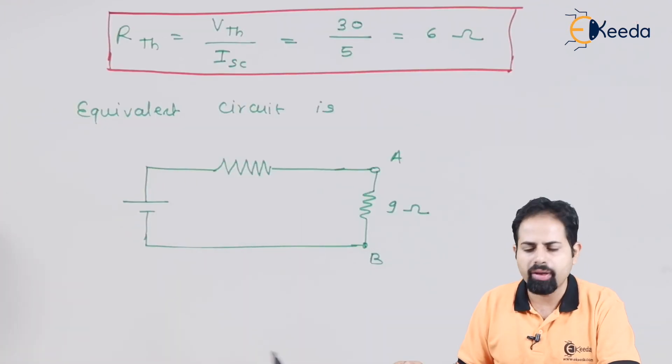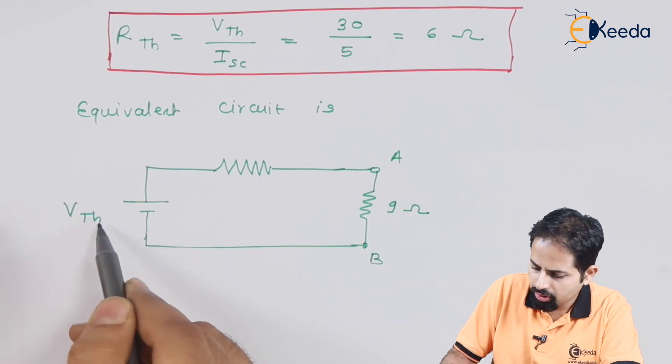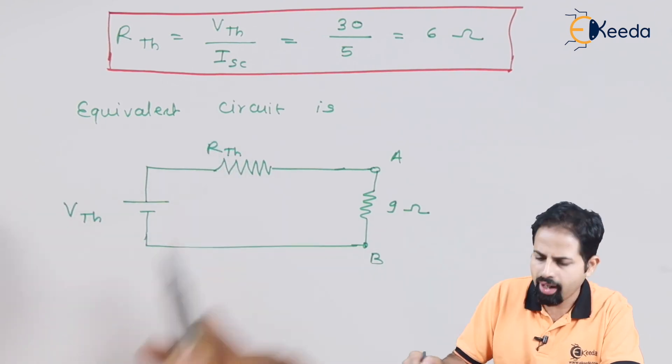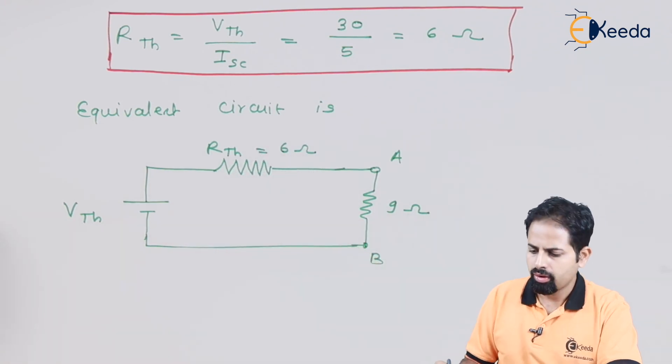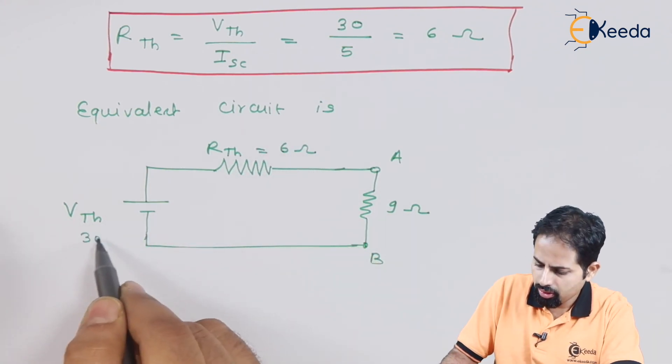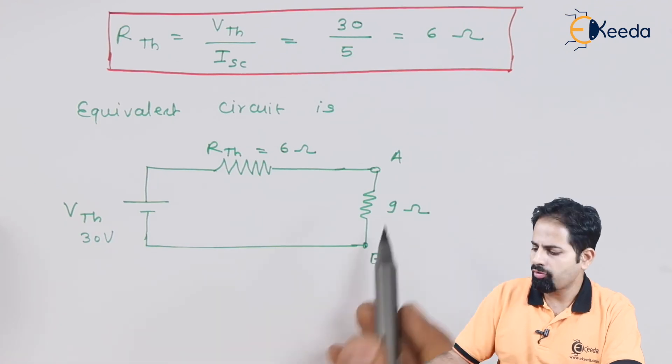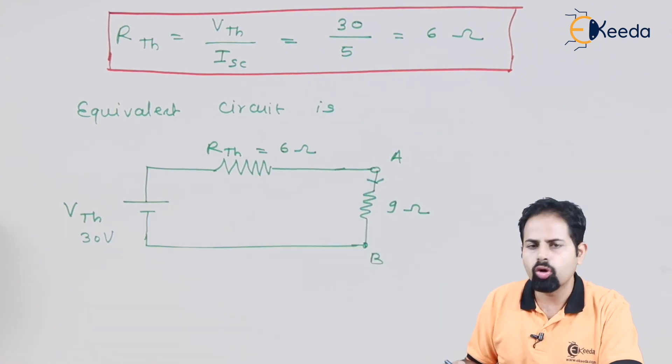Find the current in 9 ohm resistance. We first open circuited it and then it was short circuited. And the whole circuit is now represented by using Vth and Rth. And now if you want current across this 9 ohm resistor.